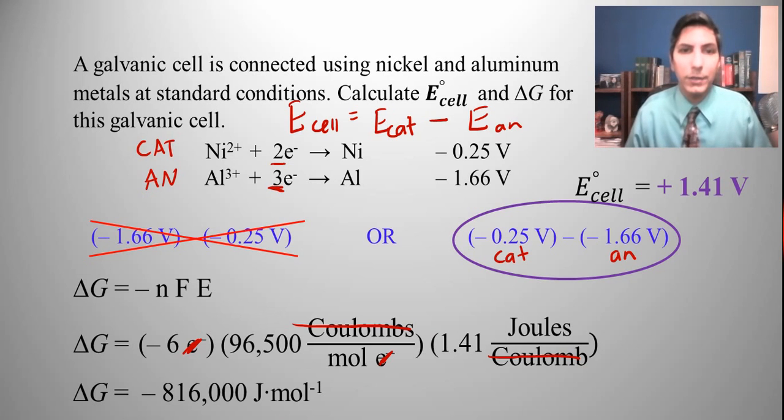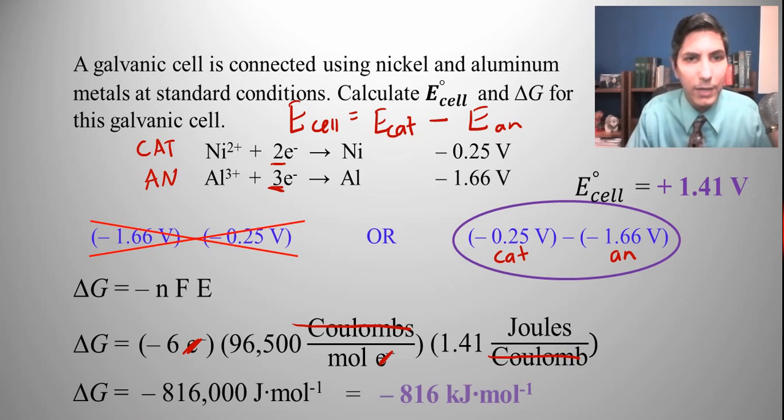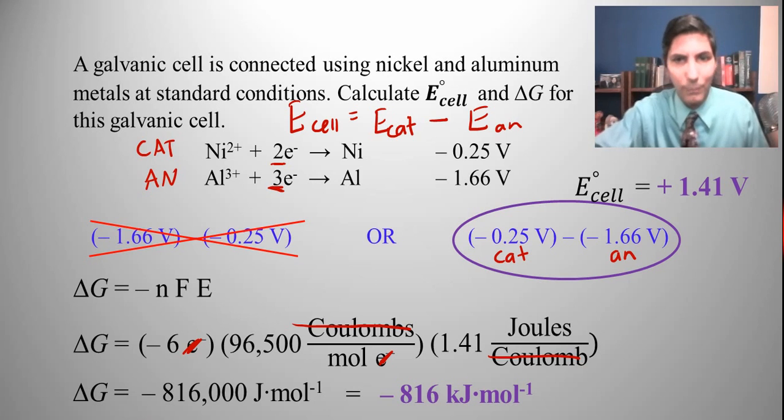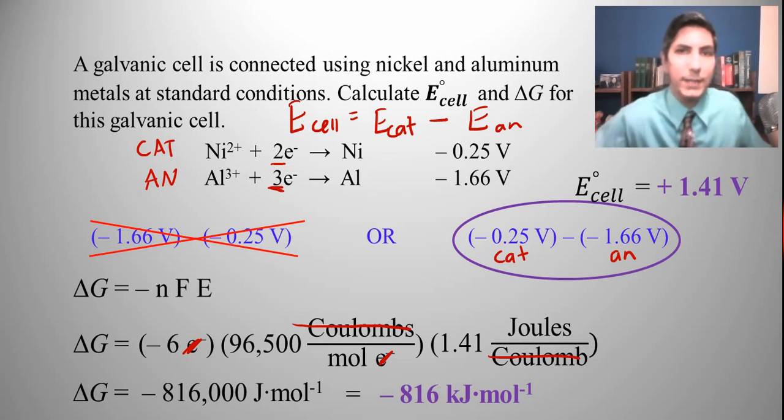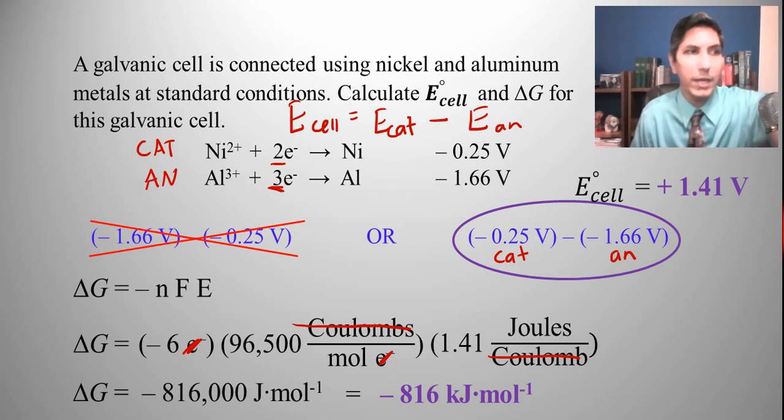Now, traditionally, we write delta G in kilojoules per mole, don't we? So I should probably divide this by 1,000 and make it negative 816 kilojoules per mole. Notice, it's very negative, isn't it? And we would expect that because all galvanic cells had better be negative delta G. They are very thermodynamically favored. And so that's how we can calculate delta G for pretty much any galvanic cell.